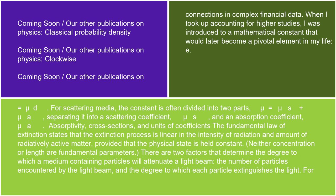Absorptivity, cross-sections, and units of coefficients. The fundamental law of extinction states that the extinction process is linear in the intensity of radiation and amount of radiatively active matter, provided that the physical state is held constant. Neither concentration nor length are fundamental parameters. There are two factors that determine the degree to which a medium containing particles will attenuate a light beam: the number of particles encountered by the light beam, and the degree to which each particle extinguishes the light.